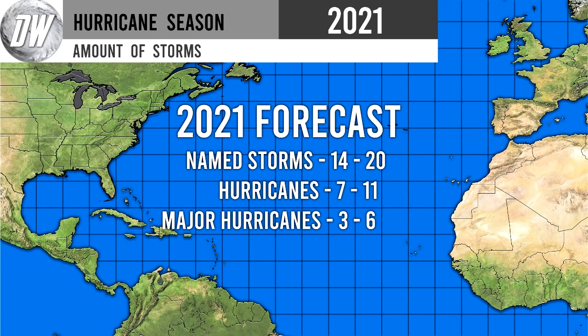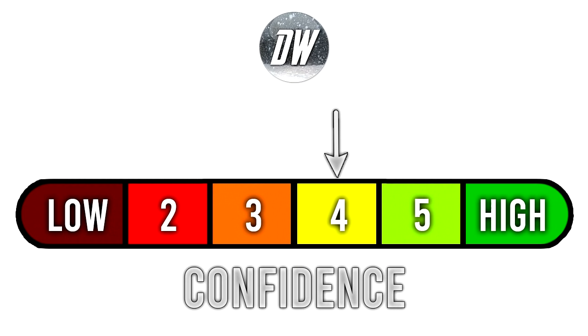Here's our storm count forecast: we're expecting 14 to 20 named storms, which is above average; 7 to 11 hurricanes, which is above average; and 3 to 6 major hurricanes, which is also above average. Overall, we're expecting an above average hurricane season. For today's confidence rating, we're at a 4 out of 6 — that's the maximum I'll ever assign for a long-range forecast.